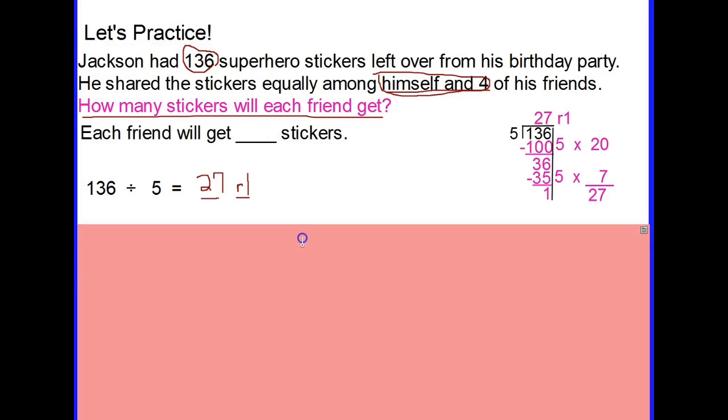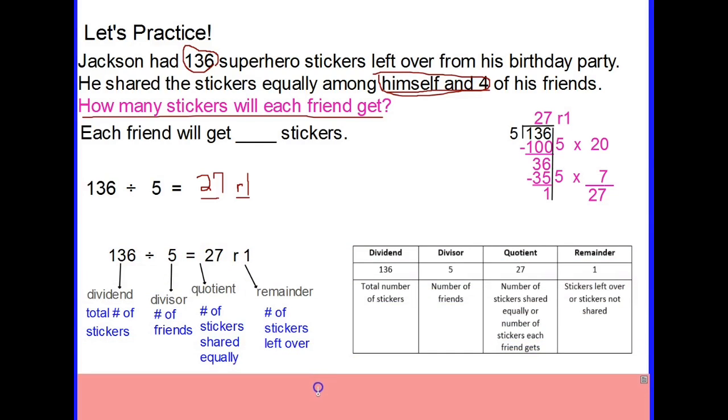Let's look at this in a little bit more detail. Here is a nice visual of what's happening. I have written this two different ways. 136 divided by 5 equals 27 remainder 1. The 136 is not only the dividend but it's the total number of stickers that Jackson starts with. The five is our divisor but it's also the number of friends, the total number of people sharing the stickers. 27 is my quotient and also the number of stickers shared equally. My remainder of one is also the number of stickers left over. I have to identify or interpret, explain what each part of my division equation means.